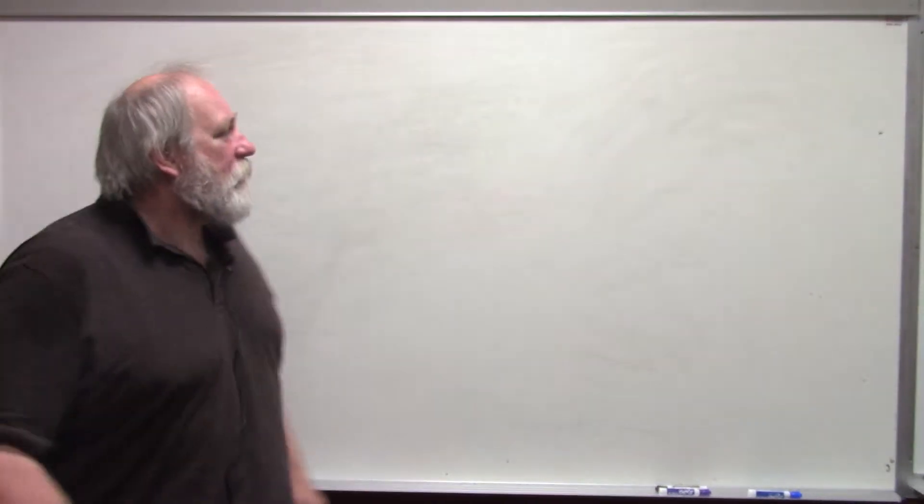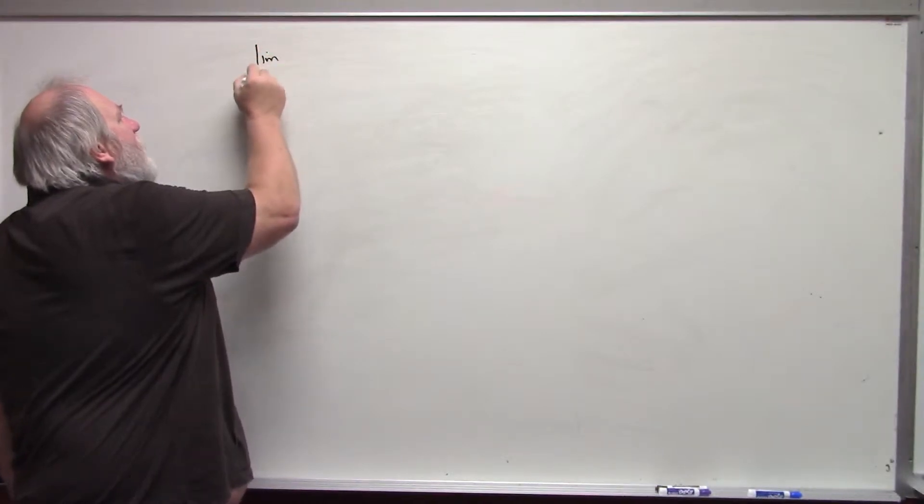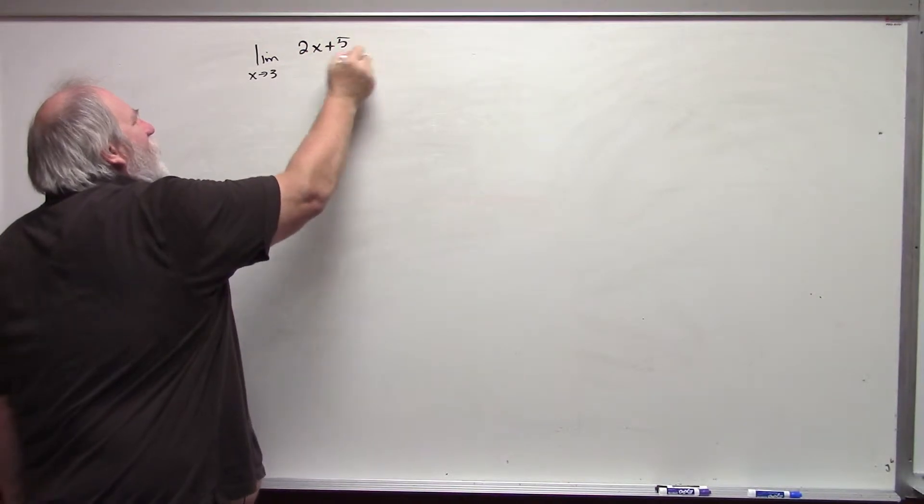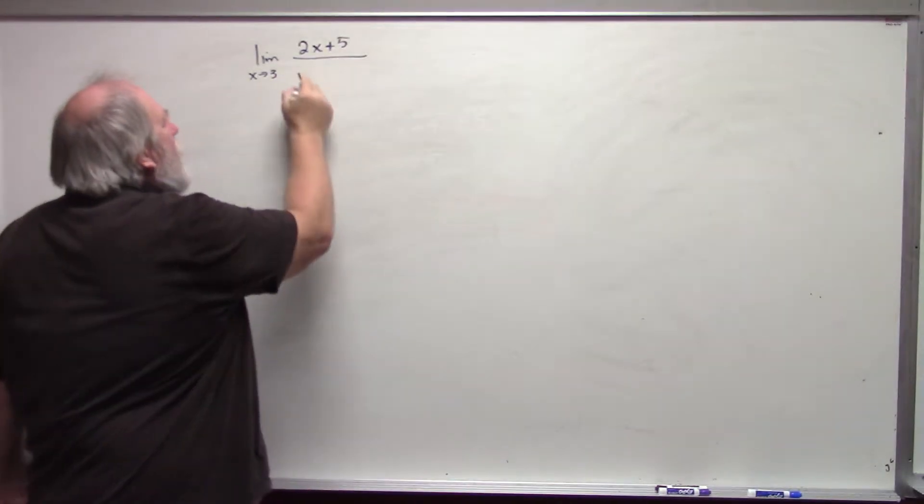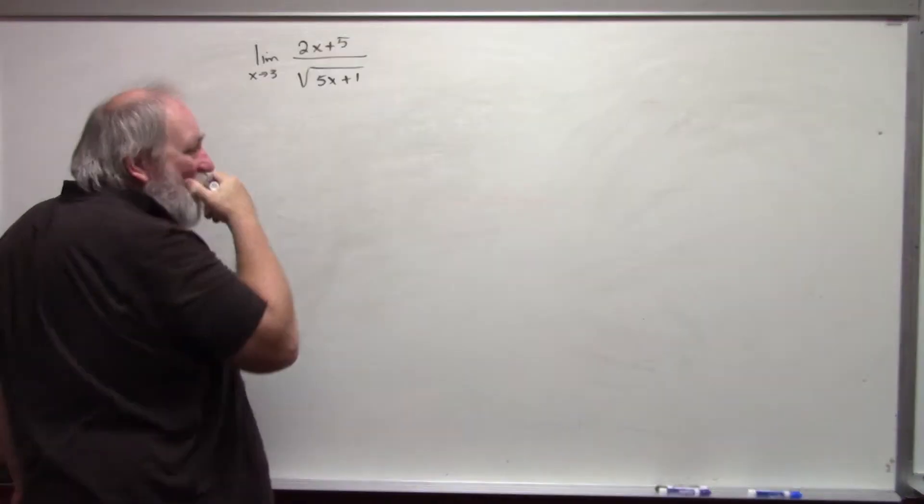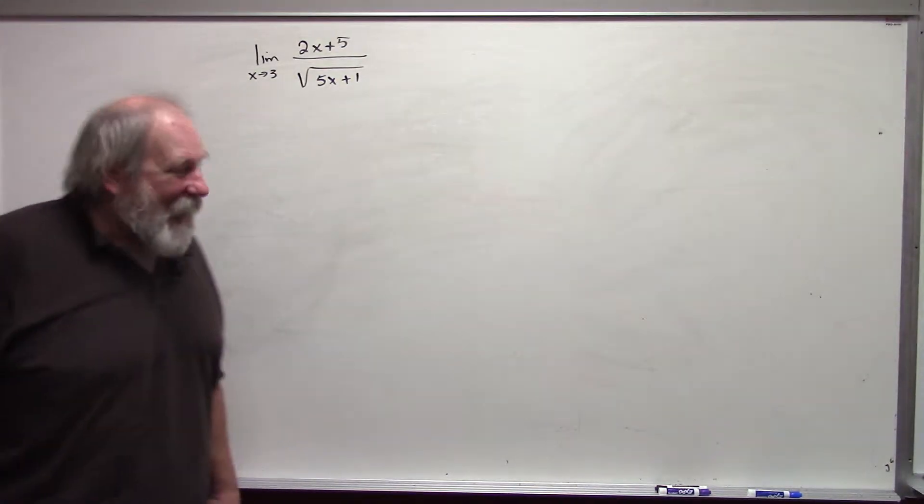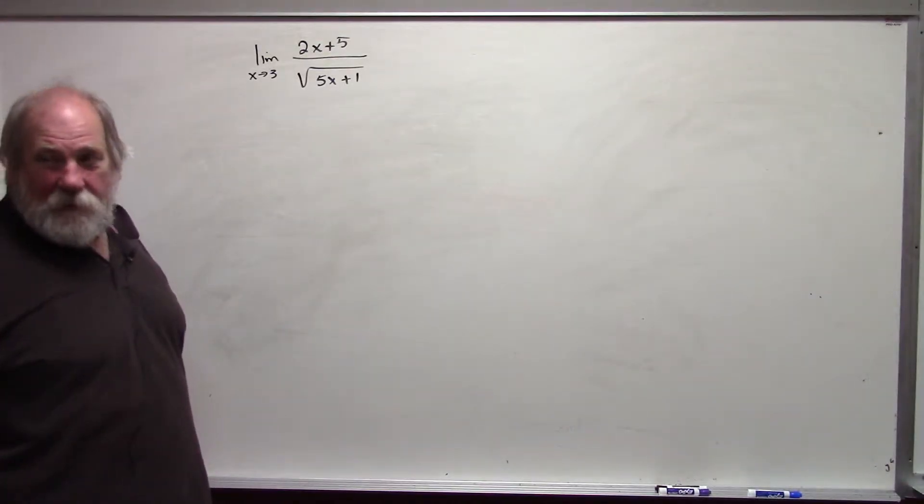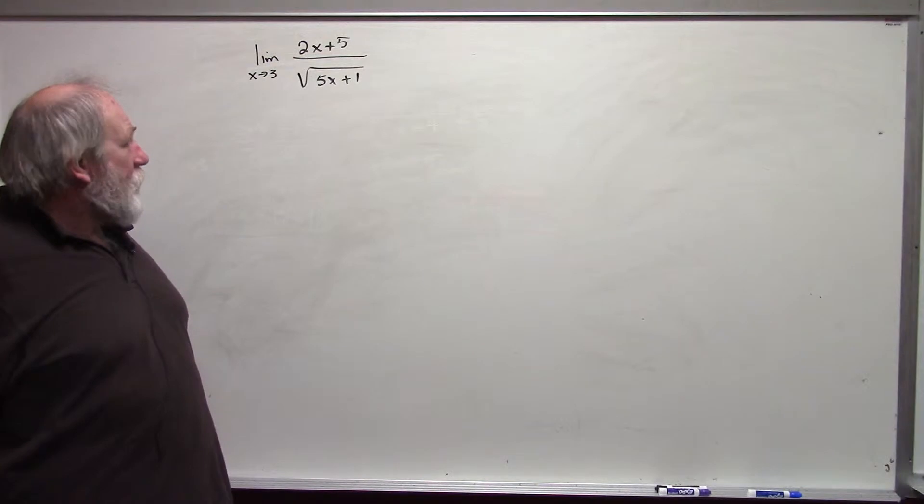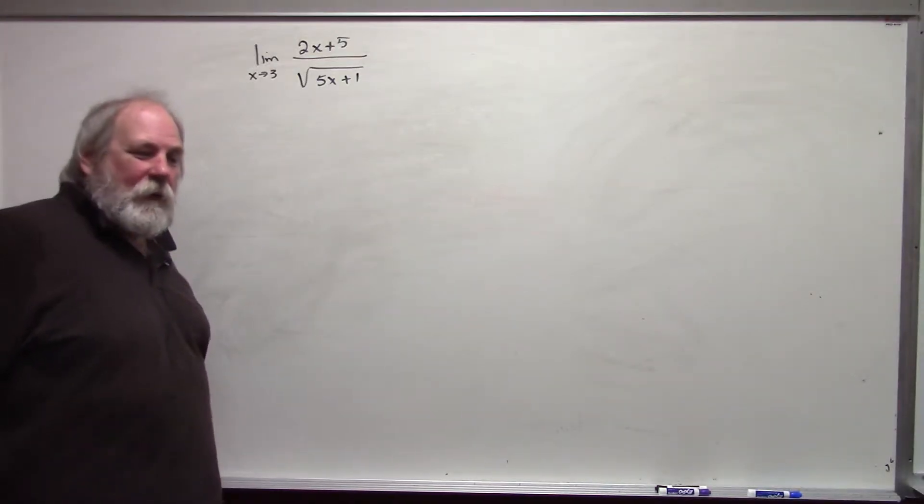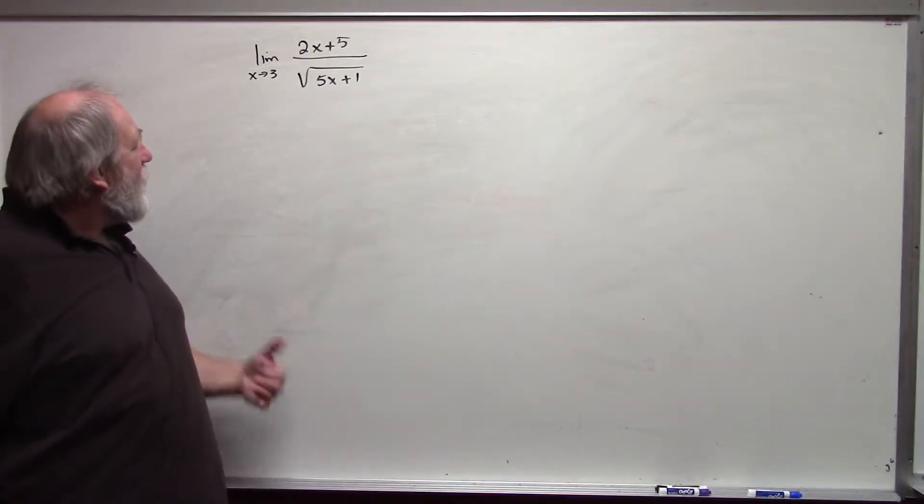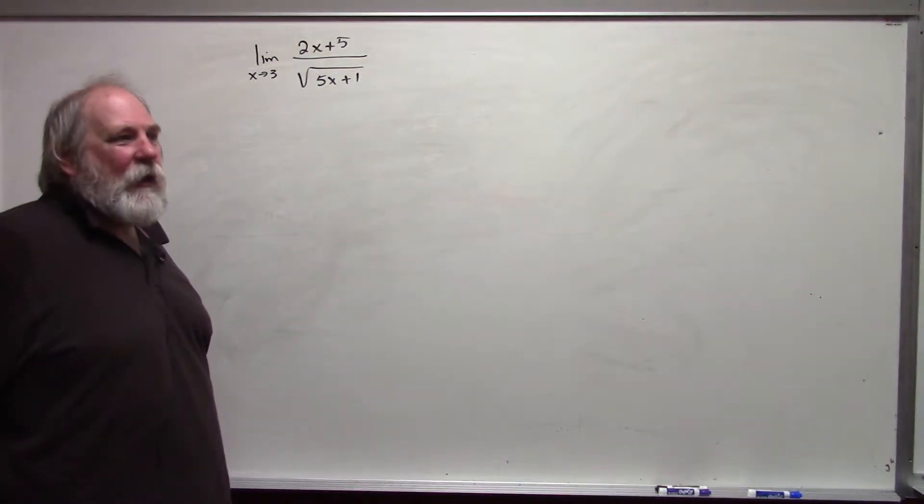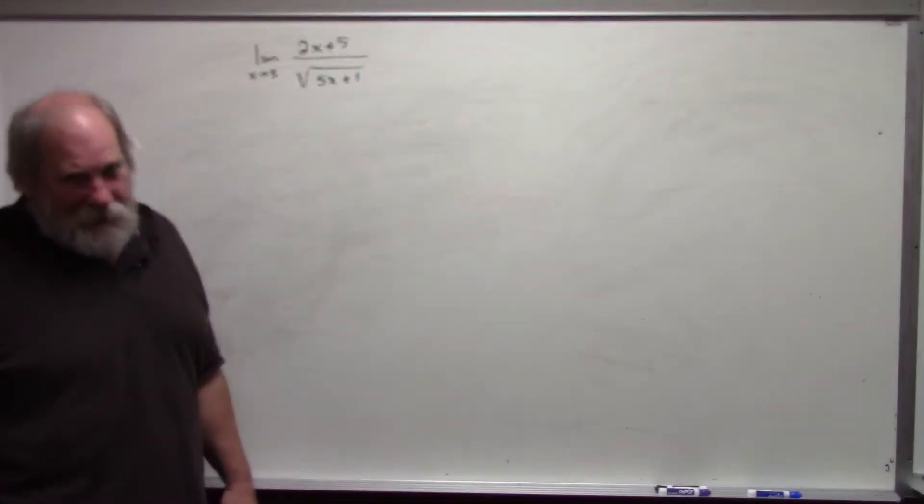The first one, limit as x approaches 3 of 2x plus 5 over the square root of 5x plus 1. Notice in this particular case, if we let x approach 3, nothing bad happens. My denominator approaches the square root of 16 which is 4. It is not 0. It's not non-real. And so we can just evaluate this limit directly.